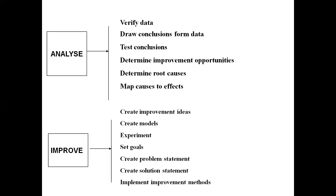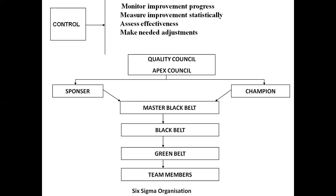In the Analyze stage: verify the data, come to conclusions from the data, test the conclusions, determine improvement opportunities, identify the root cause of problems, and map the cause-and-effect (Ishikawa) diagram. In the Improve stage: create improvement ideas, run mini-model experiments, set goals, and create problem and solution statements. In the Control stage: monitor improvement progress, measure the improvement statistically, collect pocket data, assess effectiveness of improvement, and make needed adjustments. This completes the DMAIC process.